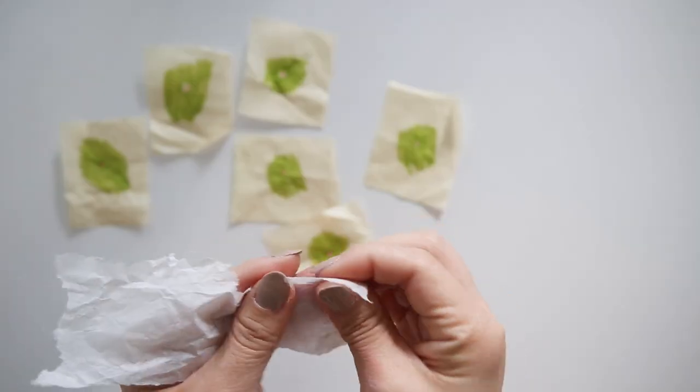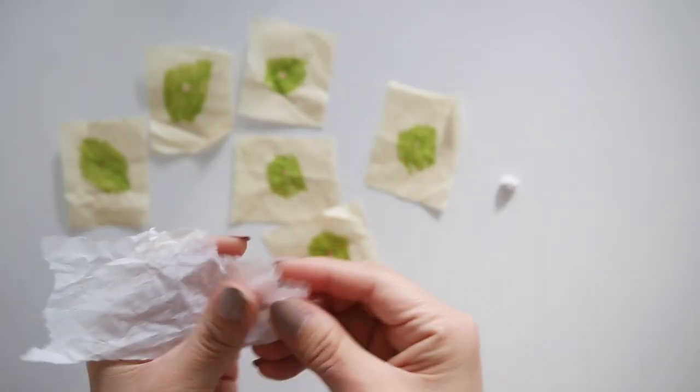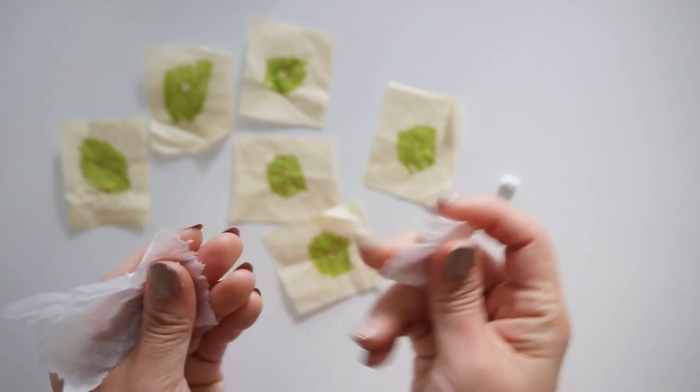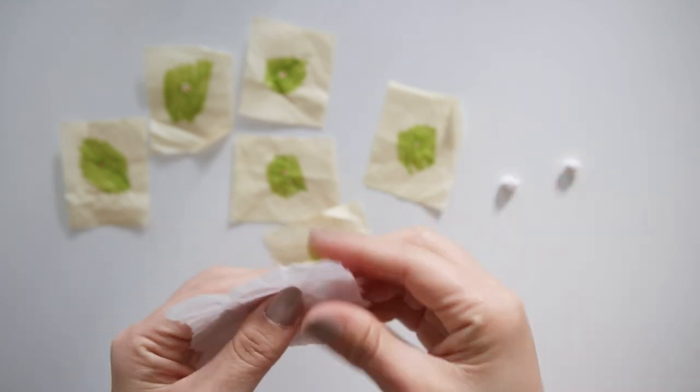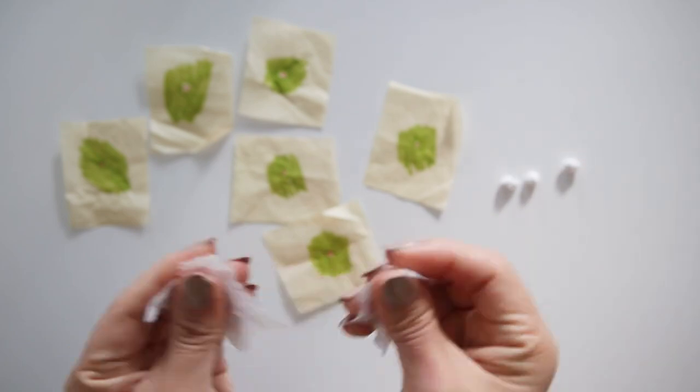Then grab some plain white tissue paper and make six tissue balls similar in size to the end of a Q-tip. Nothing fancy, I just use a scrap of tissue paper and tear it.